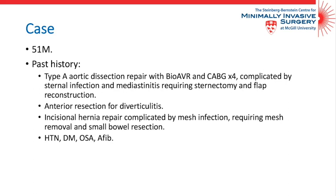We present the case of a 51-year-old male patient with extensive medical and surgical history, including previous type A aortic dissection repair with aortic valve replacement and coronary artery bypass, complicated by sternal infection and mediastinitis requiring sternectomy and flap reconstruction. He also underwent previous anterior resection for diverticulitis and previous incisional hernia repair with mesh, complicated by mesh infection requiring mesh extraction and small bowel resection.